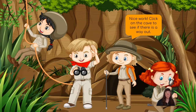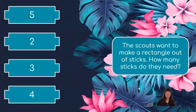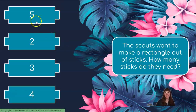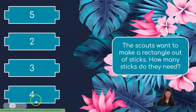Click on the cave to see if there is a way out. Oh boy! Here we go! The scouts want to make a rectangle out of sticks. How many sticks do they need? Our choices are five, two, three, or four.